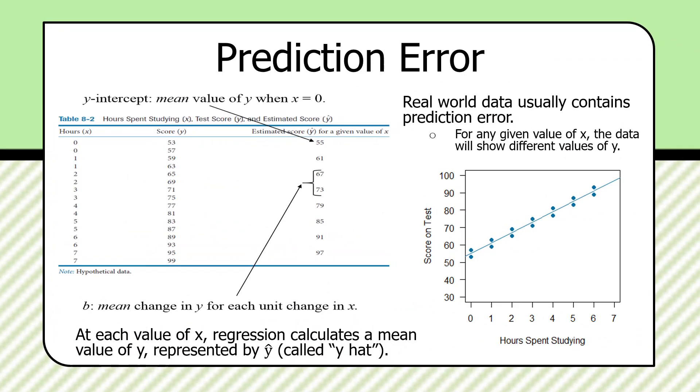has quite a bit of prediction error. Real-world data usually contains prediction error. For any given value of x, the data will show different values of y. So, what if you had two students who didn't study? They both had values of zero on x, but they had different scores on the test. What would regression do to resolve an estimate for the value of a?